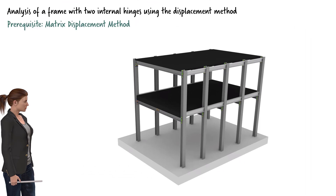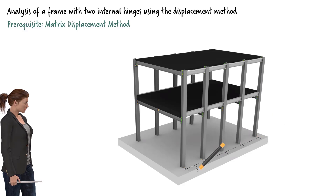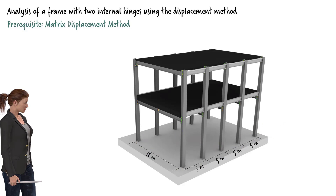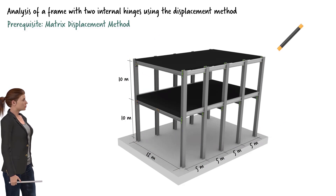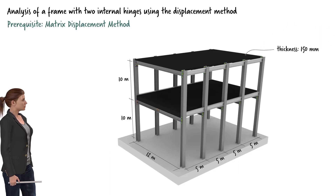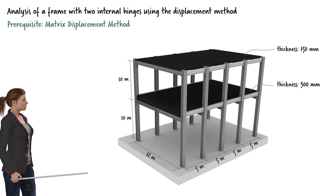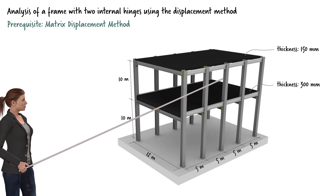The structure's steel skeleton consists of five identical frames placed five meters apart. Each frame has a span of 12 meters and a total height of 20 meters. The roof slab has a thickness of 150 millimeters, and the slab on the first floor is 300 millimeters thick. We wish to analyze the middle frame.